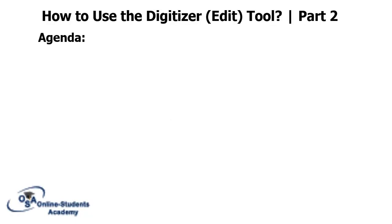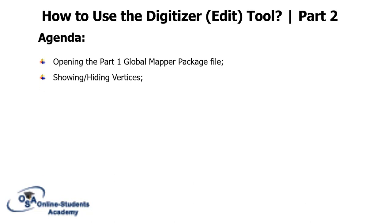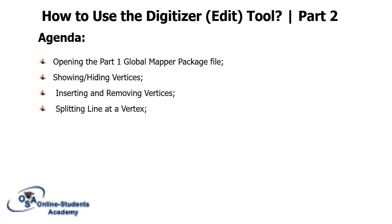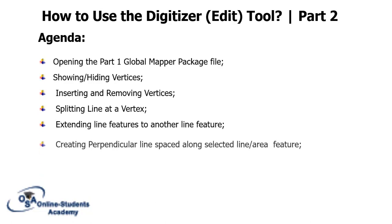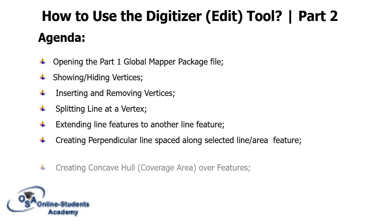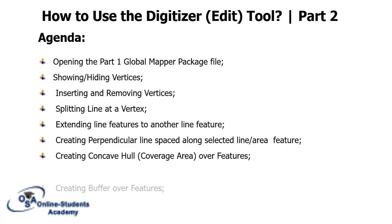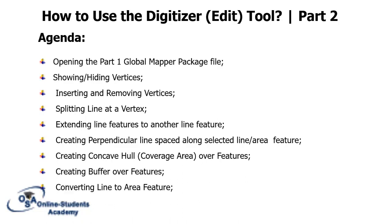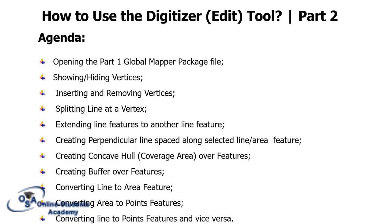Okay friends, let's continue with part 2 of our tutorial on how to use the digitizer or the editor in Global Mapper. We will start by opening the package file that we saved in the last tutorial. We will see how to show or hide vertices, how to insert or remove vertices, how to split a line at a particular vertex, extending a line feature to another line feature, creating perpendicular lines equally spaced along a line or area feature, creating a coverage area over features, creating a buffer over features, converting line to area features, converting area to point features, and converting line to point features and vice versa. So let's open our file.